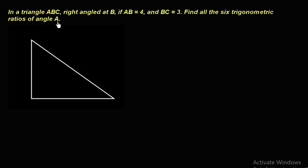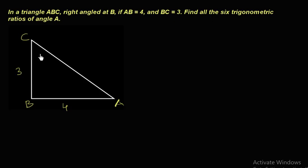Let us see how to find the six trigonometric ratios of angle A. So let me take angle A here — this is A, B, and C. AB is equals to 4 units and BC equals 3 units. To find any trigonometric ratio, we have to know all three sides of the triangle, so we have to find AC.